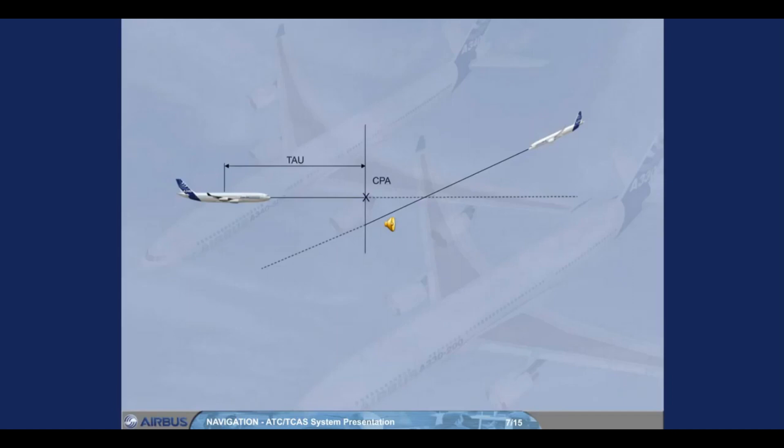Each time the relative position of the intruder shows a collision threat, oral and visual advisories are triggered. Visual advisories are displayed on both NDs. The oral alert and vertical orders ensure a sufficient trajectory separation and a minimal vertical speed variation, taking into account all intruders.